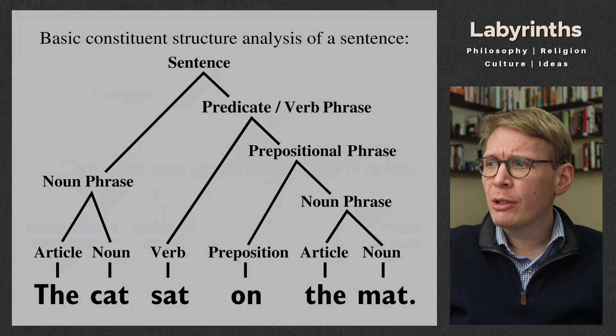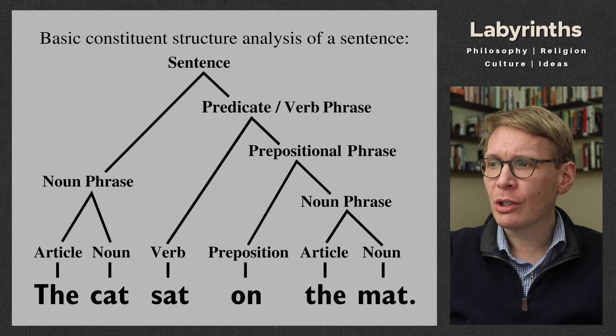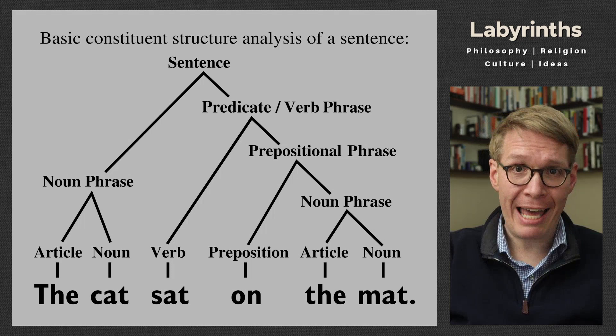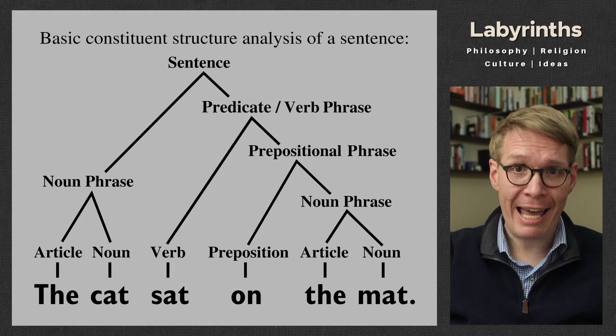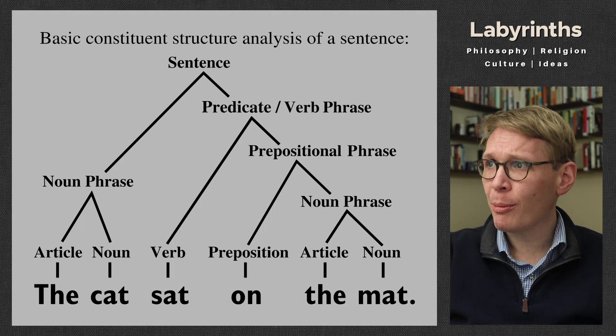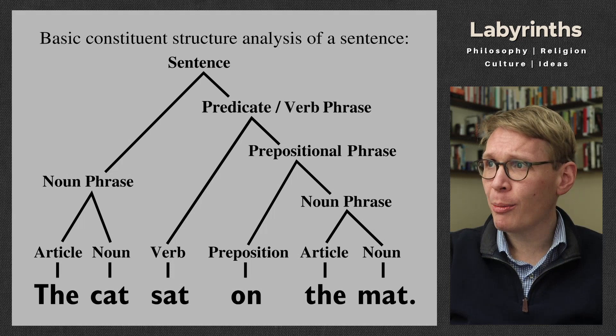Here's an example we used in the last lecture that we can take apart and look at its components: 'The cat sat on the mat.' You have your noun phrase on the left — that is your subject, 'the cat.' Then you have your verb, 'sat.' The cat can simply sit, but we also know where the cat is sitting, indicated by the prepositional phrase 'on the mat.' So the subject here is 'the cat,' and 'sat on the mat' is the predicate — that's all the information this sentence gives us about the cat.